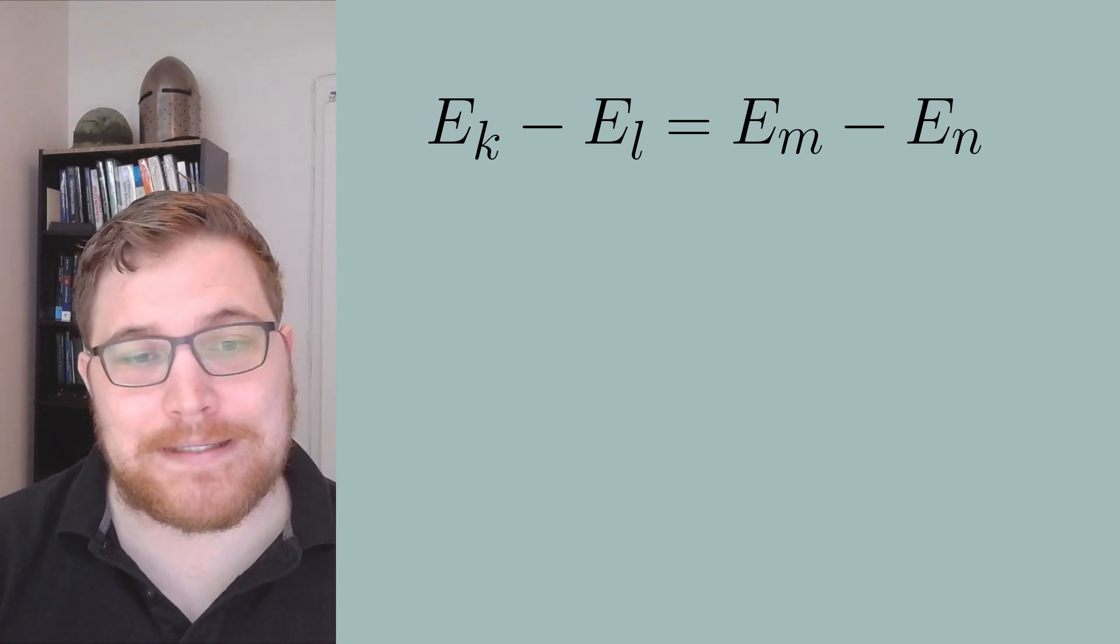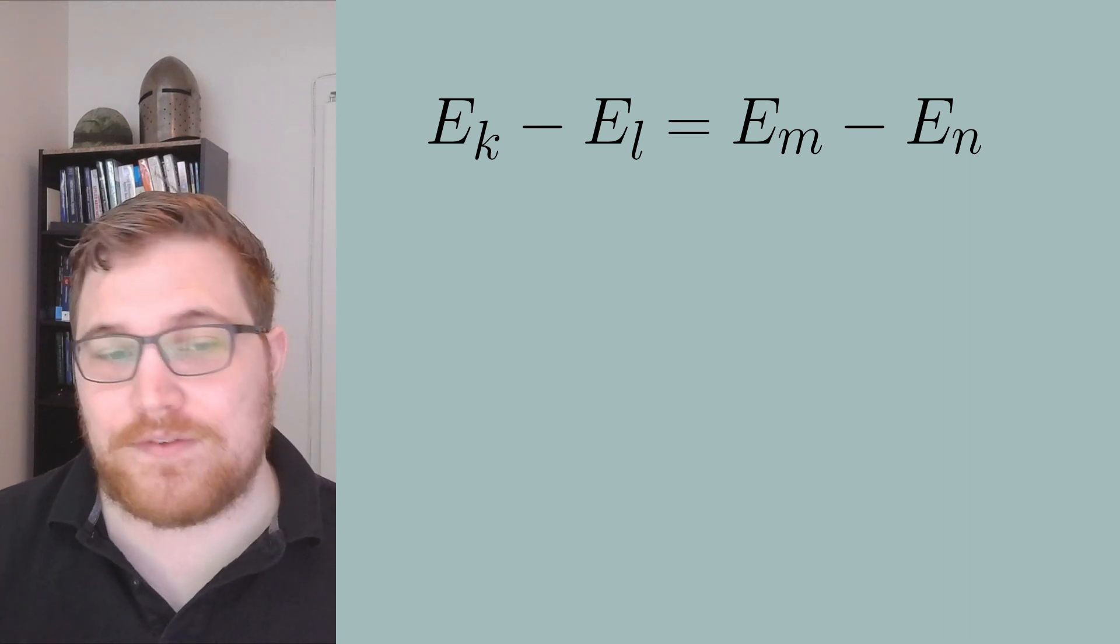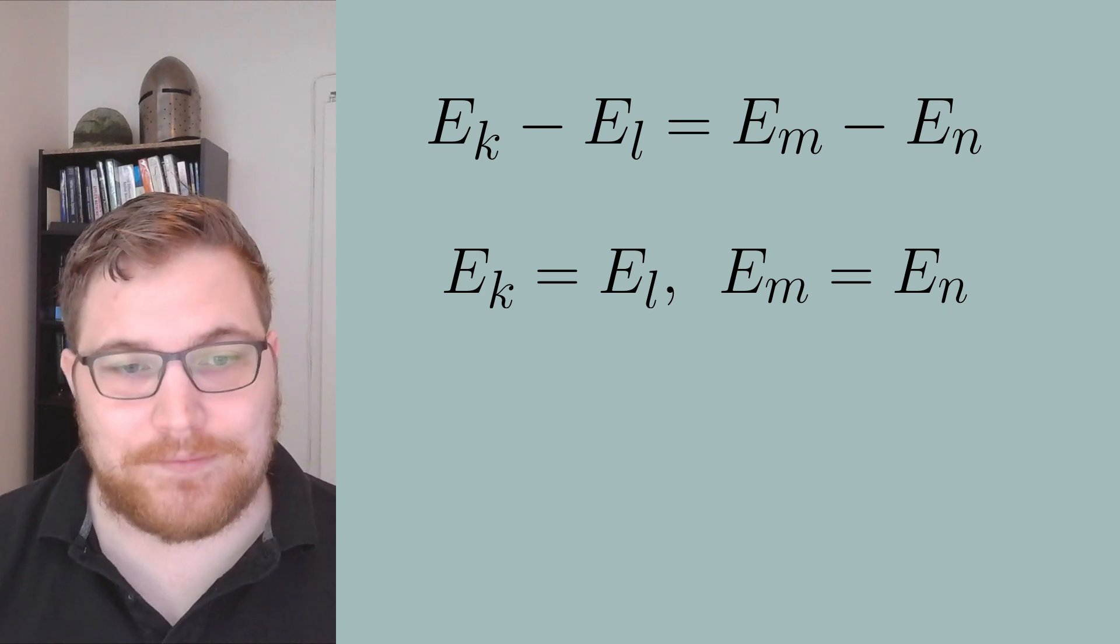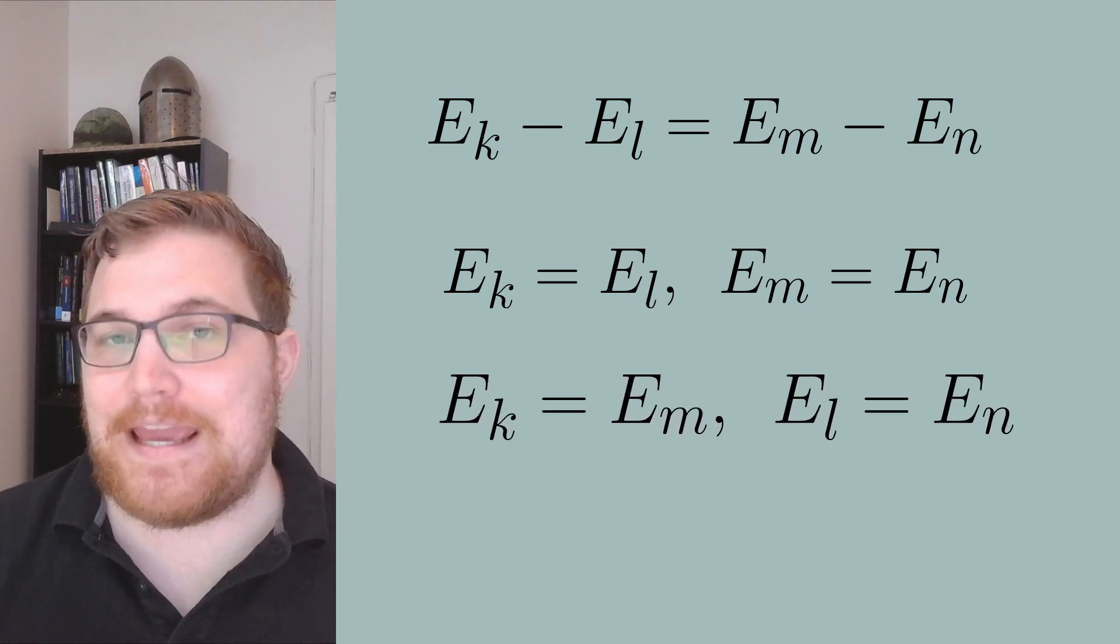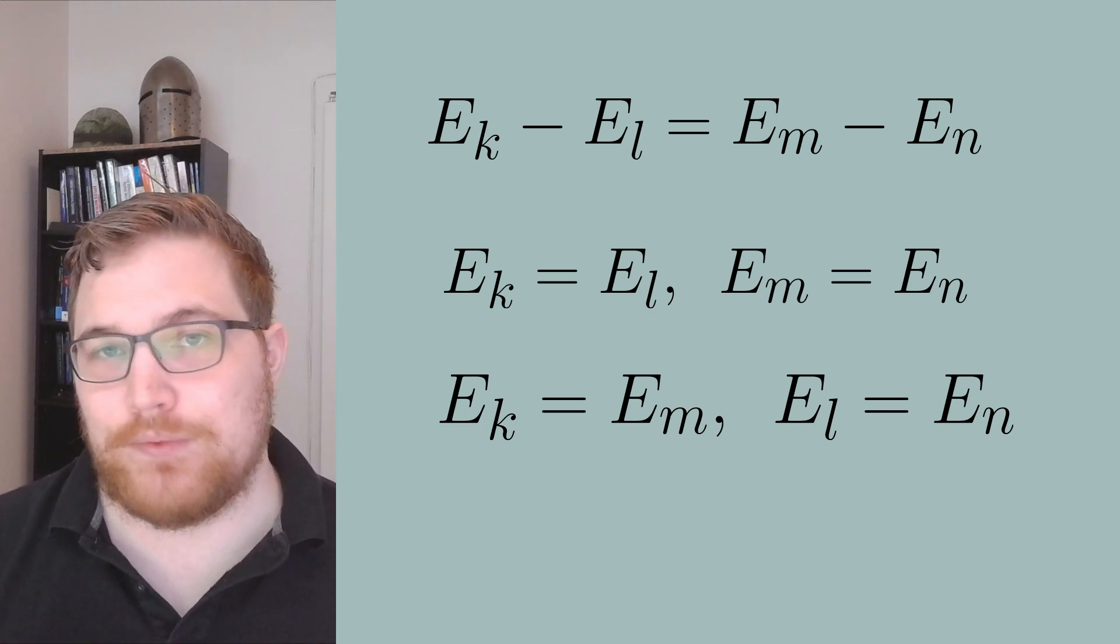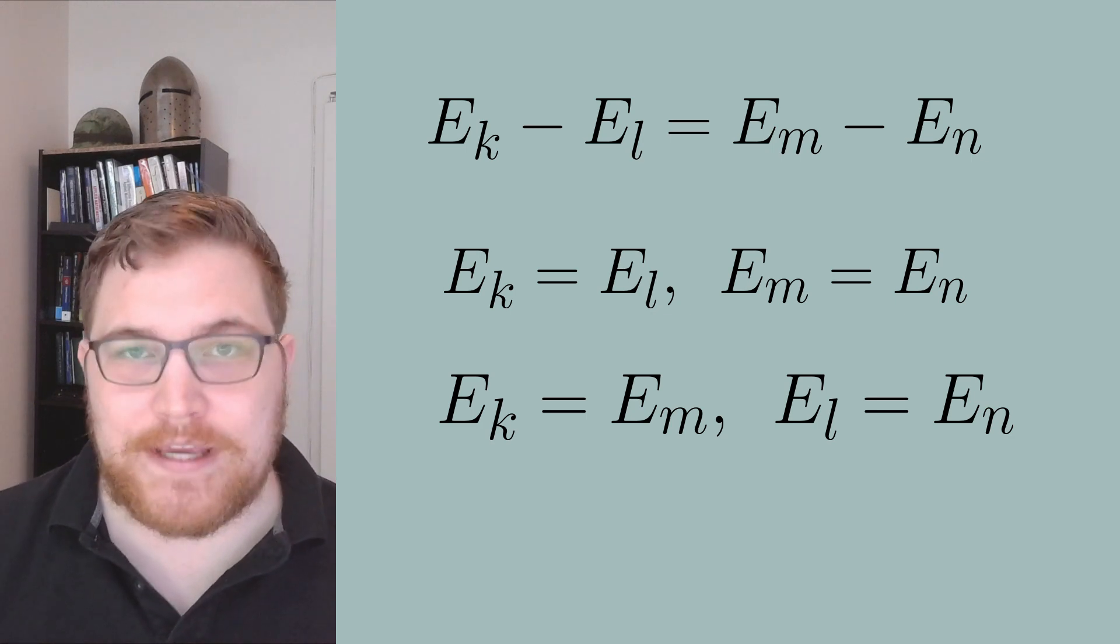So E_k minus E_l is equal to E_m minus E_n, which means that E_k is equal to E_l and E_m is equal to E_n. Or we'll have that E_k is equal to E_m and E_l is equal to E_n. So what this tells us is that all of the energy gaps are unique.